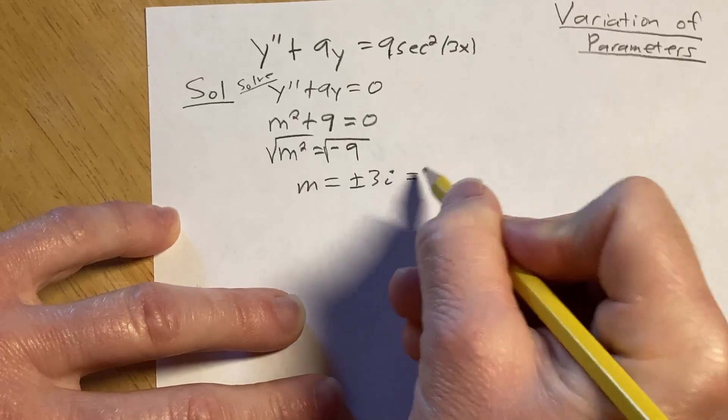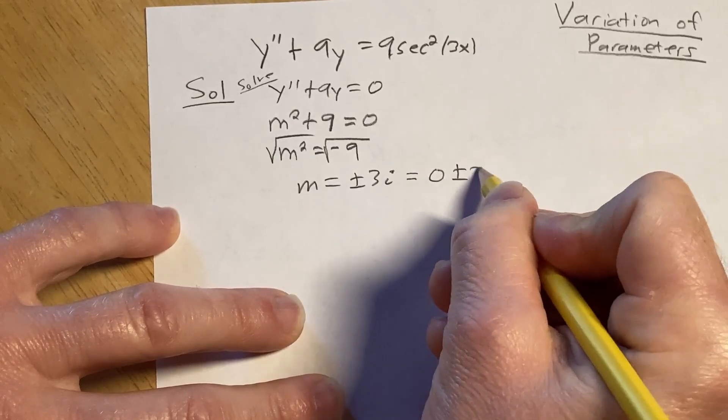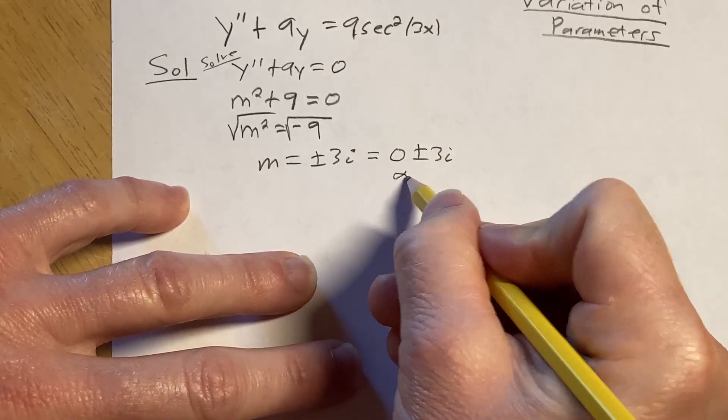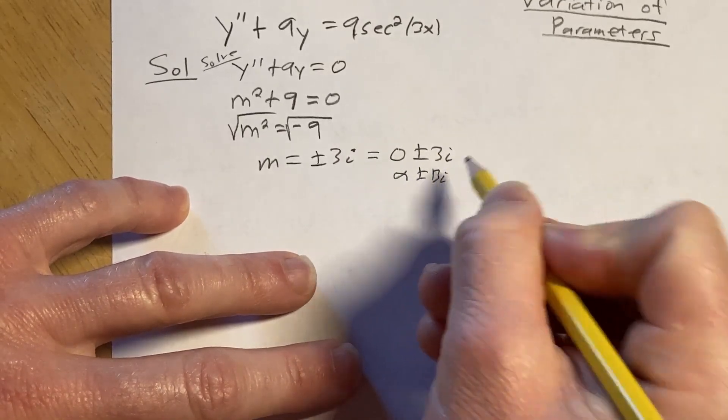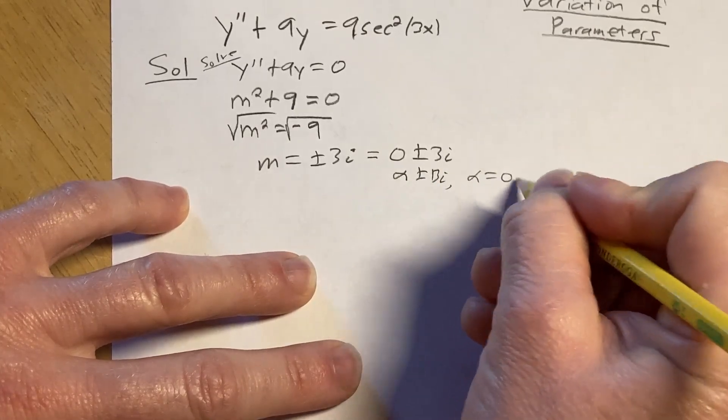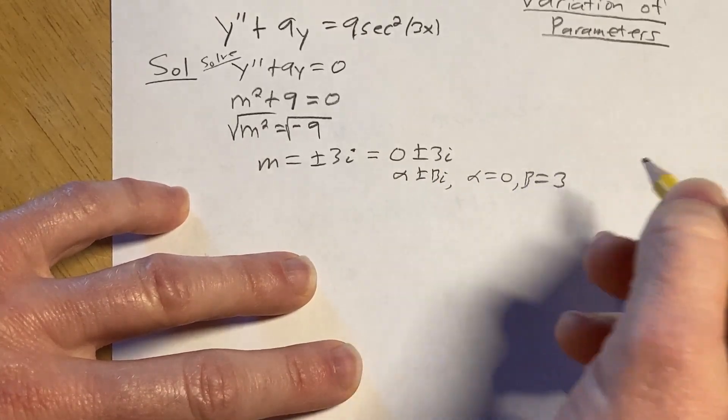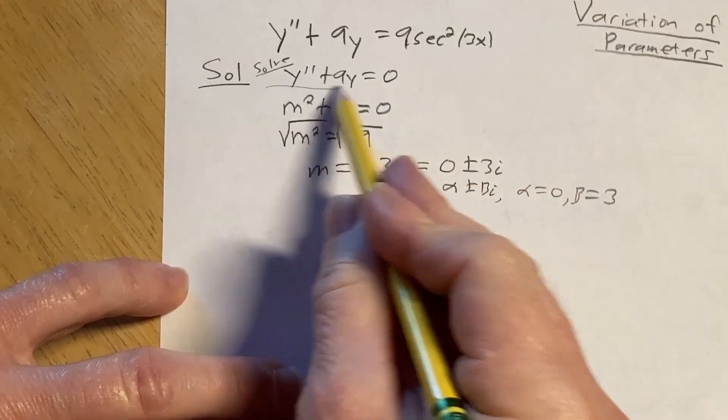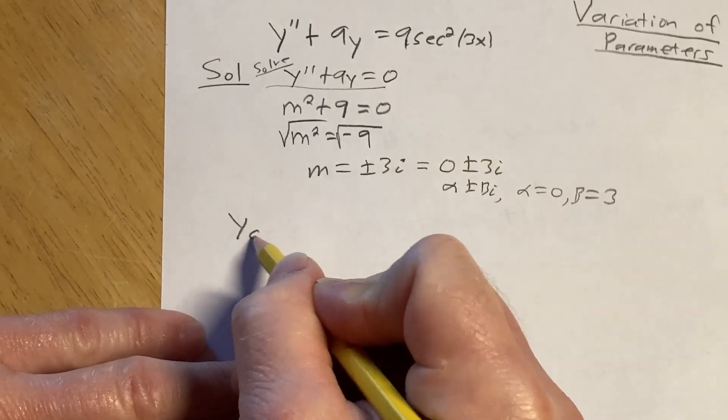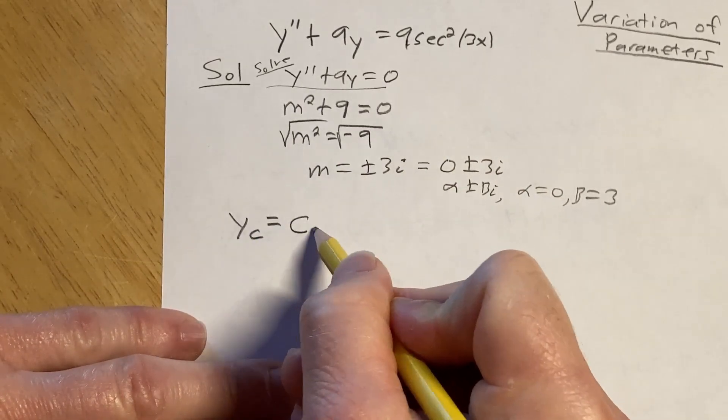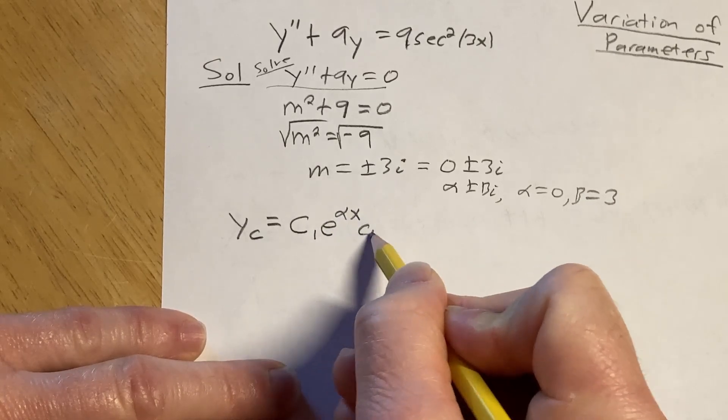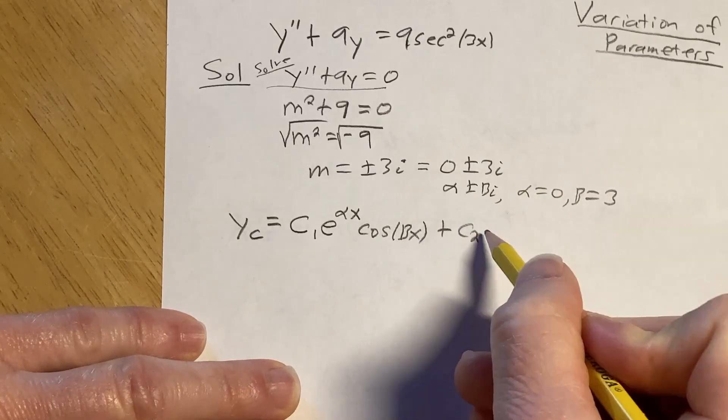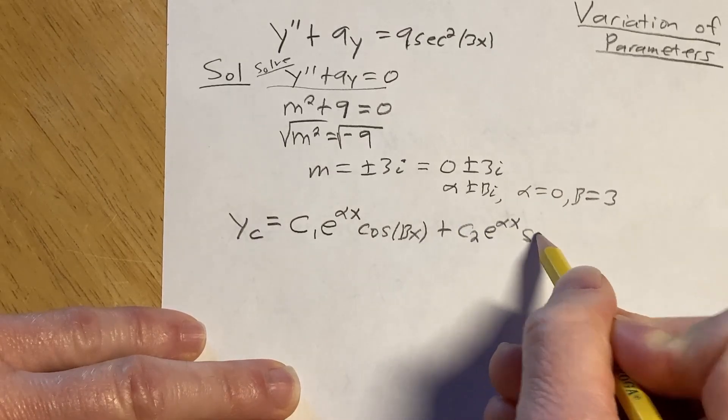Now, this is a complex number. So it's really written as zero plus or minus 3i. And now we want to identify the real and imaginary parts. So think of this as alpha plus or minus beta i. From this, we can see that alpha is zero and beta is three. And the formula you use now for the answer, which is called the complementary function.